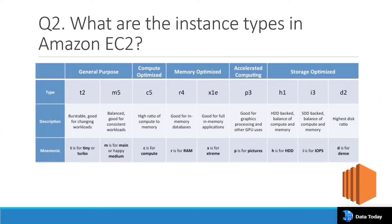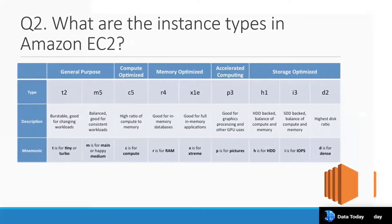M5 is for balanced workloads, good for consistent workloads. Compute optimized like C5 has a high ratio of compute to memory — C is for compute. Memory optimized R4 and X1e are good for in-memory databases and full in-memory applications. Accelerated computing like P3 is good for graphics and GPU uses. Storage optimized options include H1, I3, and D2. These are the instance types available with EC2.